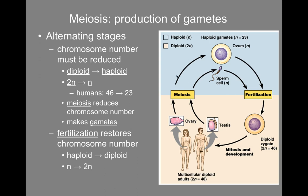Their sperm cells and egg cells will someday meet another sperm cell or egg cell, producing diploid zygotes — the first cell to create a tiny human being of their own. So it's an alternation: you have diploid cells in your body, diploid cells start the process of meiosis, you create haploid cells, and those haploid cells join together in fertilization to create a new diploid cell, which goes on to create a diploid organism, and so on.